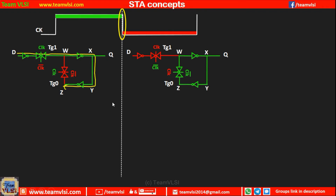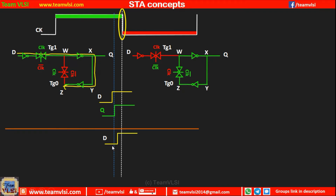Suppose this is the setup time requirement before the latching edge. If our data changes before the setup time requirement, there will be no issue — this change will be captured. Now suppose our data changes after the setup time requirement. Before turning on transmission gate 0, suppose D was 0, so W will be 1, X will be 0, and Z will be 1. Before turning this transmission gate 0 on, our Z is 1.